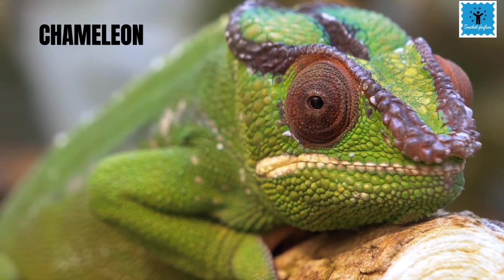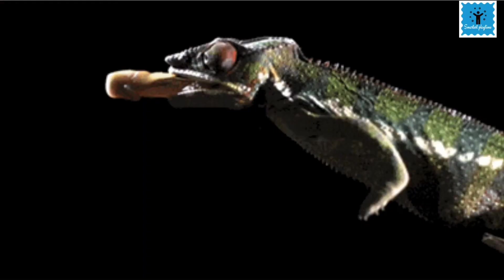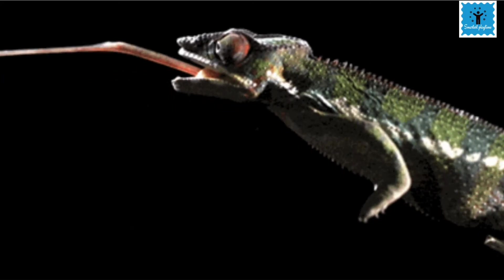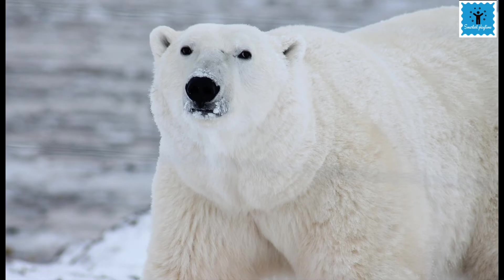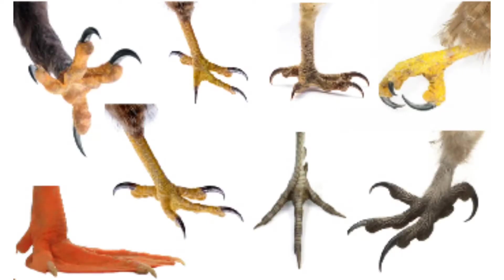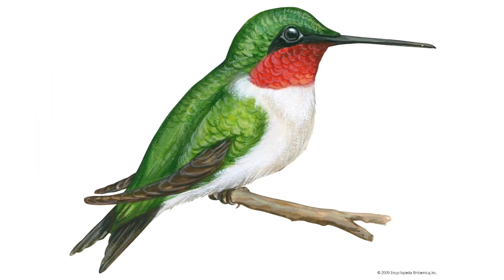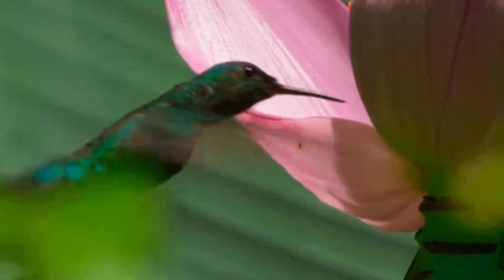the chameleon has camera-like eyes which help it to focus on its prey, and it has a long tongue so it can launch its tongue like a projectile and catch the prey. In the case of the bear, its body is covered with fur to protect it from extreme cold. Different animals have different shaped beaks and claws, and these shapes depend on the type of food available in their surroundings.